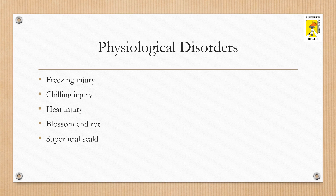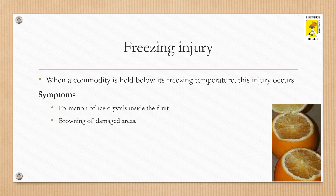Types of physiological disorders include freezing injury, chilling injury, heat injury, blossom end rot, and superficial scald. Freezing injury occurs when a commodity is held below its freezing temperature, which is generally at zero degrees Celsius or even less in some fruits. Common symptoms include formation of ice crystals inside the fruit and browning of damaged areas.